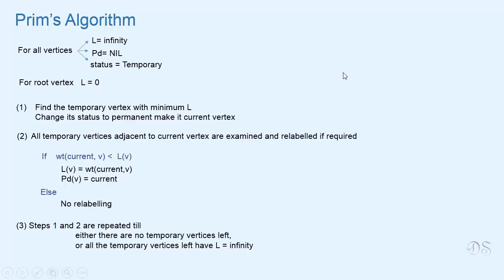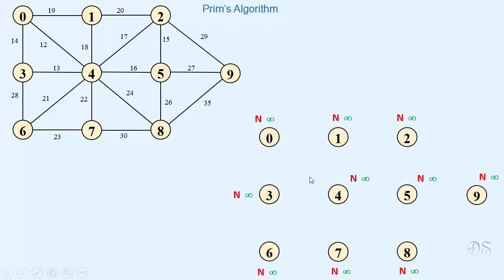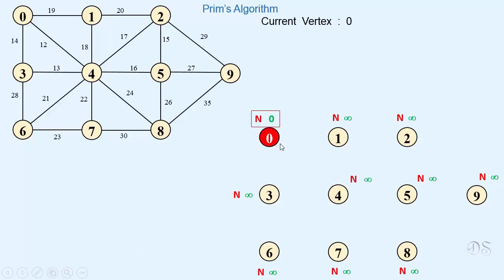In the next video, we will understand the whole procedure with the help of an example. We will understand the procedure of Prim's algorithm with the help of this graph. Initially, all vertices are temporary, length of all vertices is infinity, and predecessor is nil. We will take vertex 0 as the root vertex. The first step is to make the length of root vertex equal to 0, so we make the length of vertex 0 equal to 0. From all the temporary vertices, we select the one with minimum length — that is vertex 0 — and make it permanent. Now vertex 0 is our current vertex, so we will examine all temporary vertices adjacent to this vertex 0.